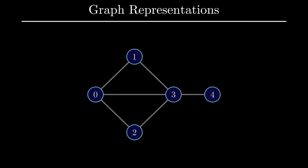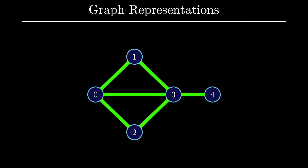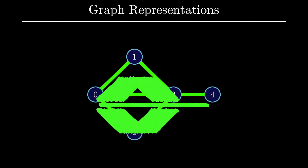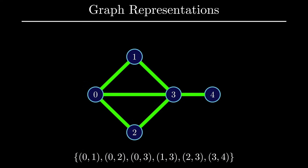The second valid representation of a graph is actually fairly simple. We take all the edges and construct a set with each edge as follows. This representation is called an edge set and it also contains all the information about vertices and edges that you would need for a graph. However, this representation is not as common because it's a little hard to extract information about vertices of a graph using this particular representation.